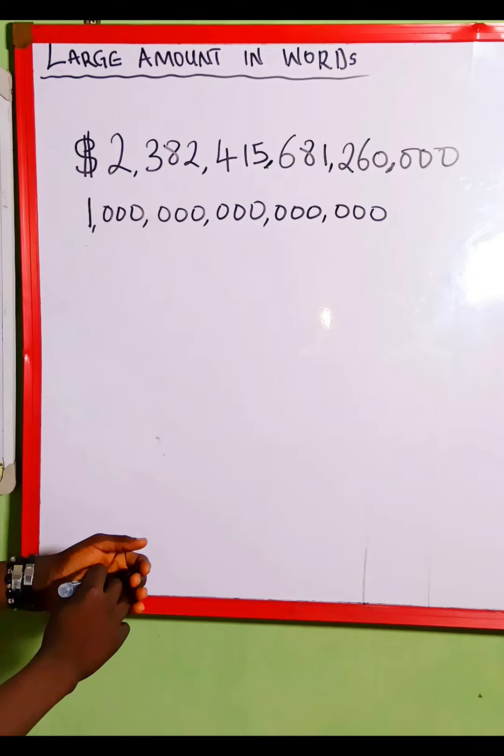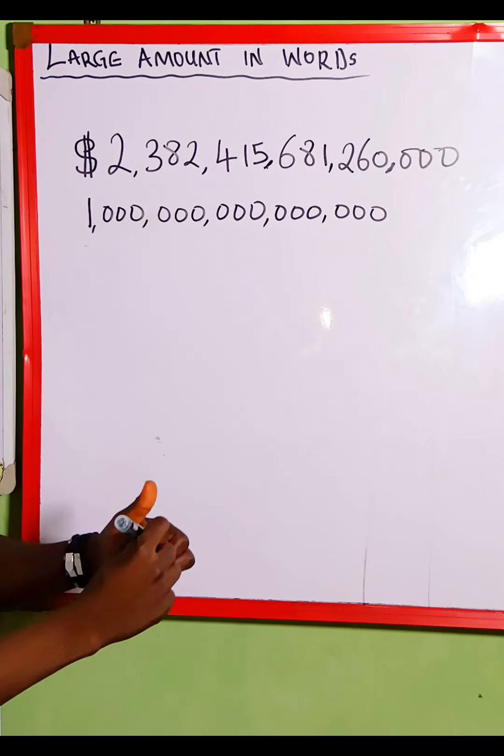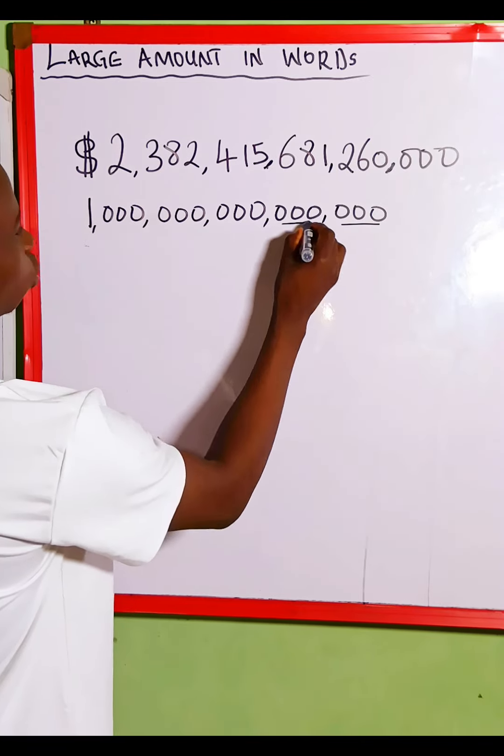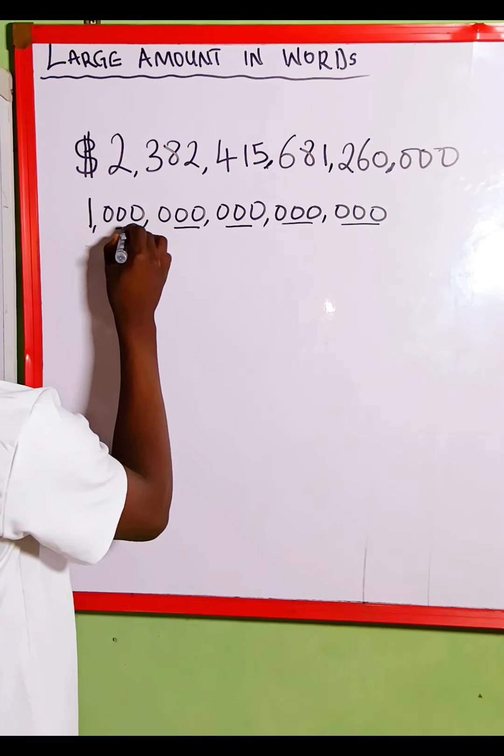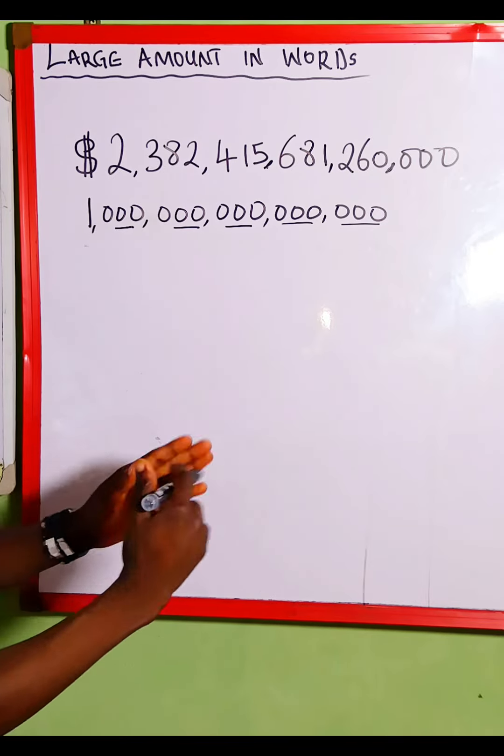And if you look at this amount given on the board, first of all, before we go to this amount, let's count how many sets of zeros are in front of 1. Now we have 1, 2, 3, 4 and 5. We have 5 different groups of zeros grouped into 5.